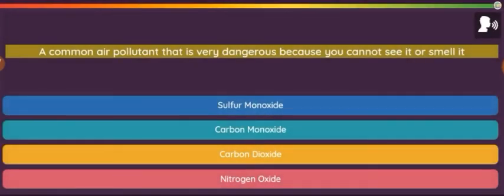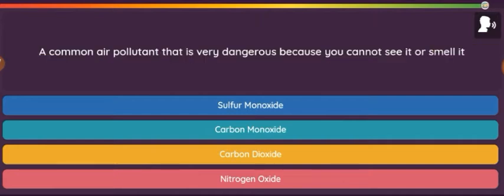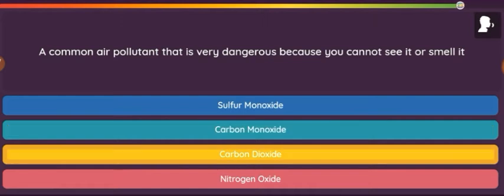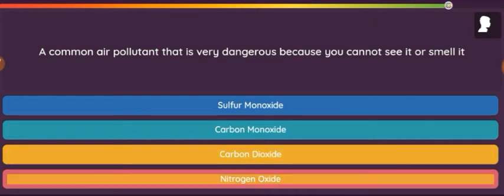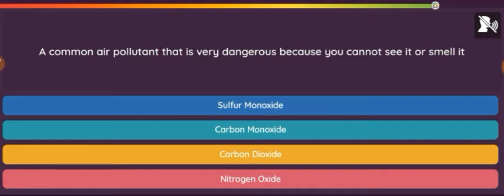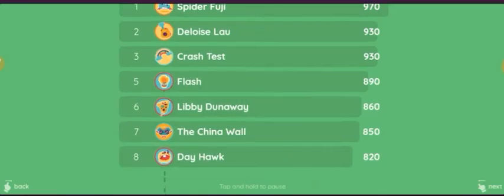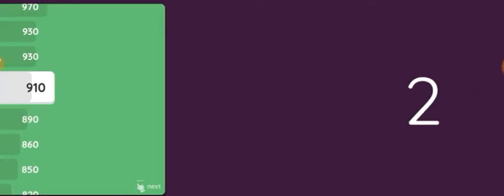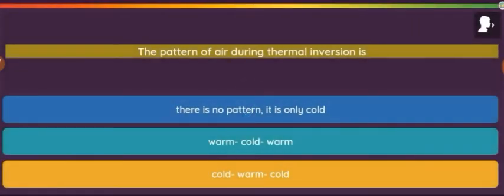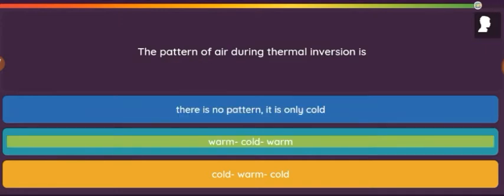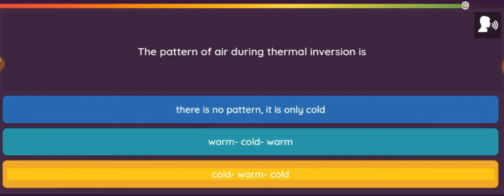Question: A common air pollutant that is very dangerous because you cannot see it or smell it. Option 1: Sulfur monoxide. Option 2: Carbon monoxide. Option 3: Carbon dioxide. Option 4: Nitrogen oxide. Question: The pattern of air during thermal inversion is. Option 1: There is no pattern, it is only cold. Option 2: Warm, cold, warm. Option 3: Cold, warm, cold.